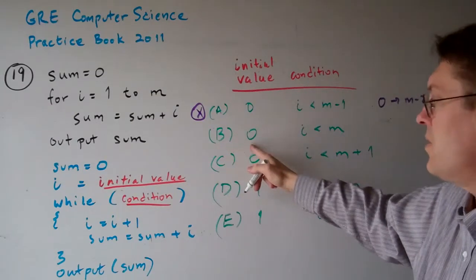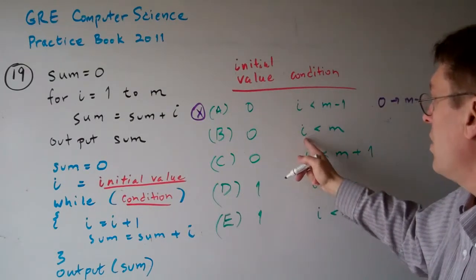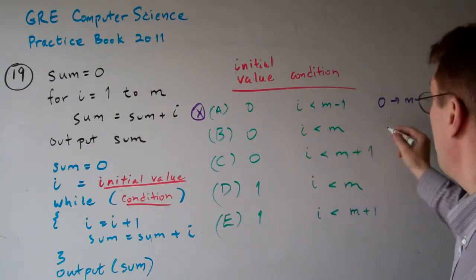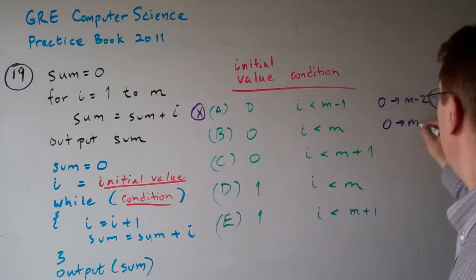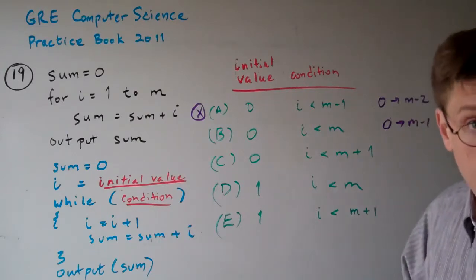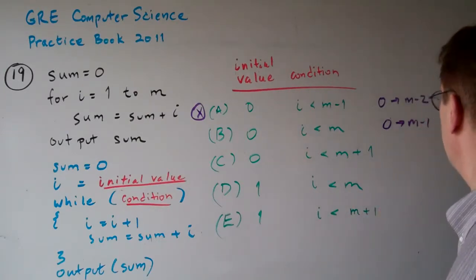Option B: if we start off at 0 and go to i is less than m, we go from 0 to m minus 1. That is m times, so that's possibly the correct answer.